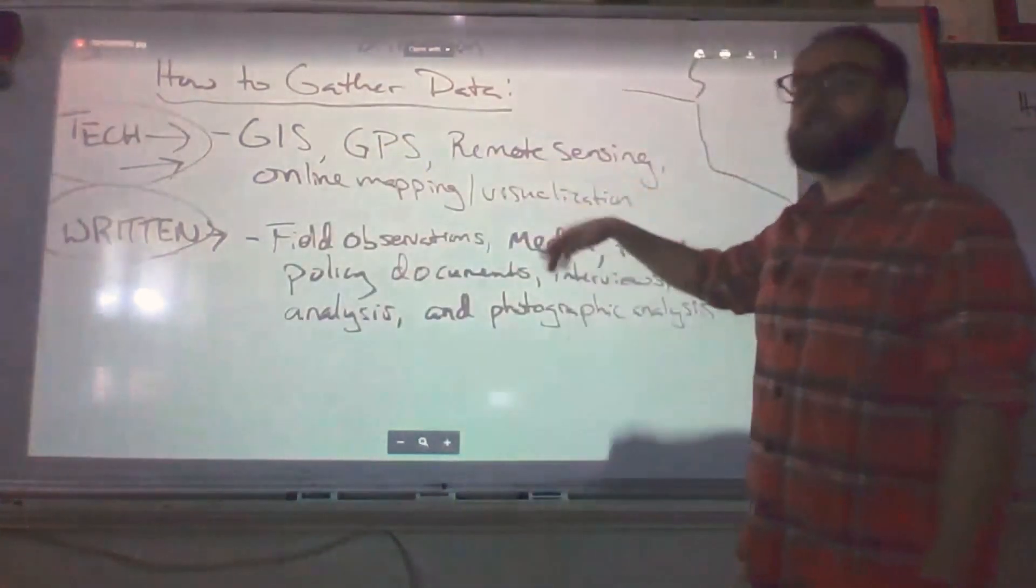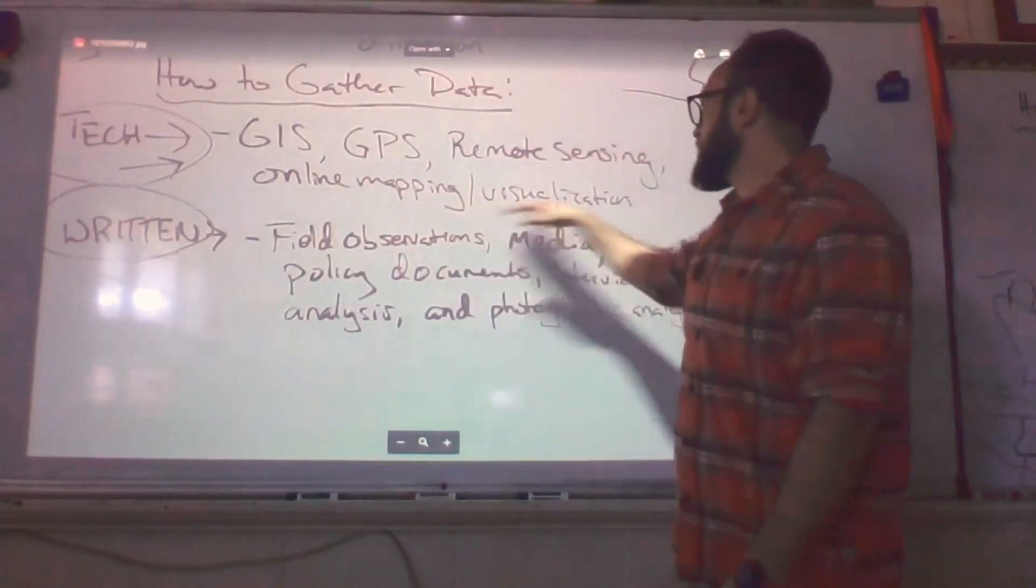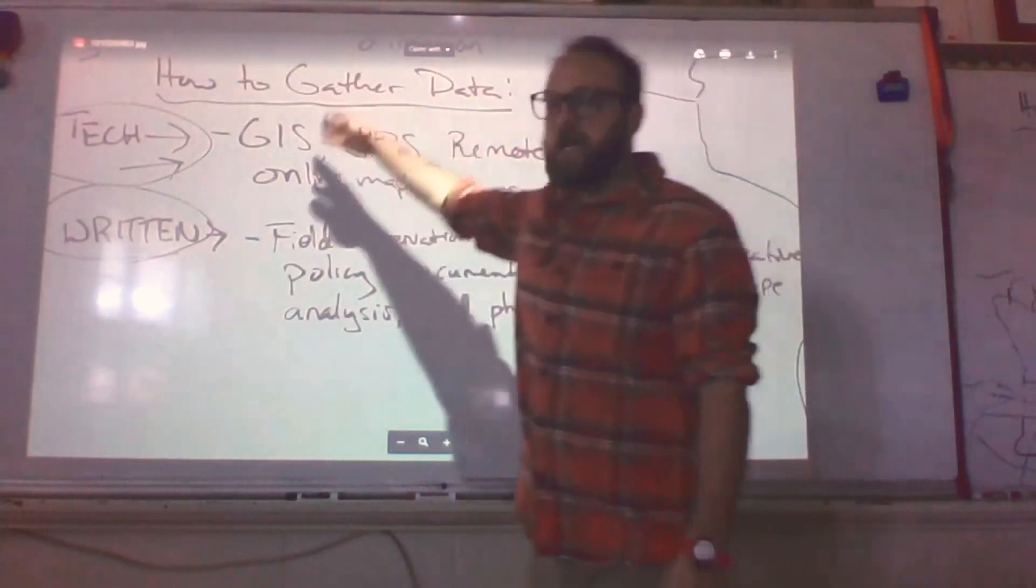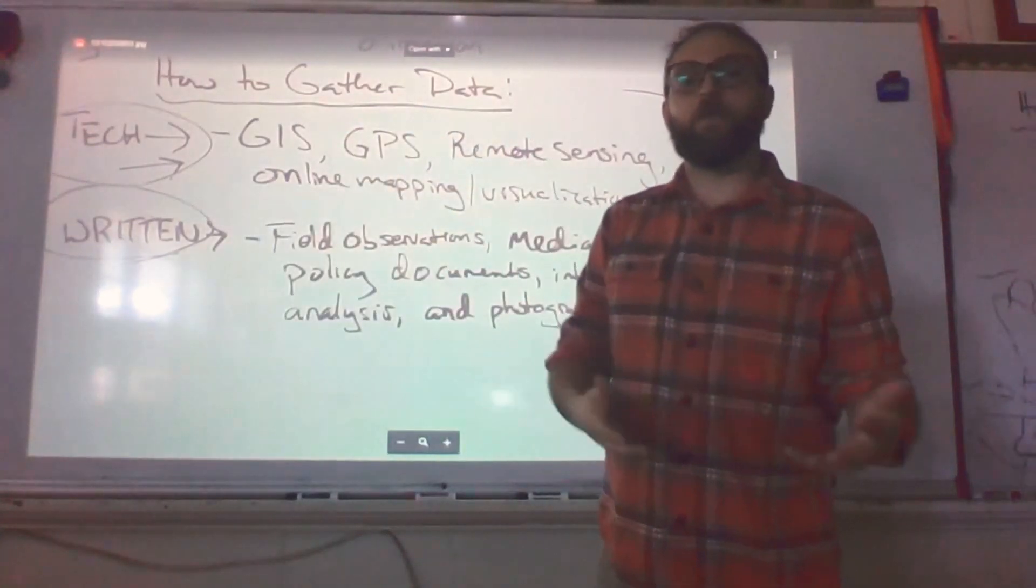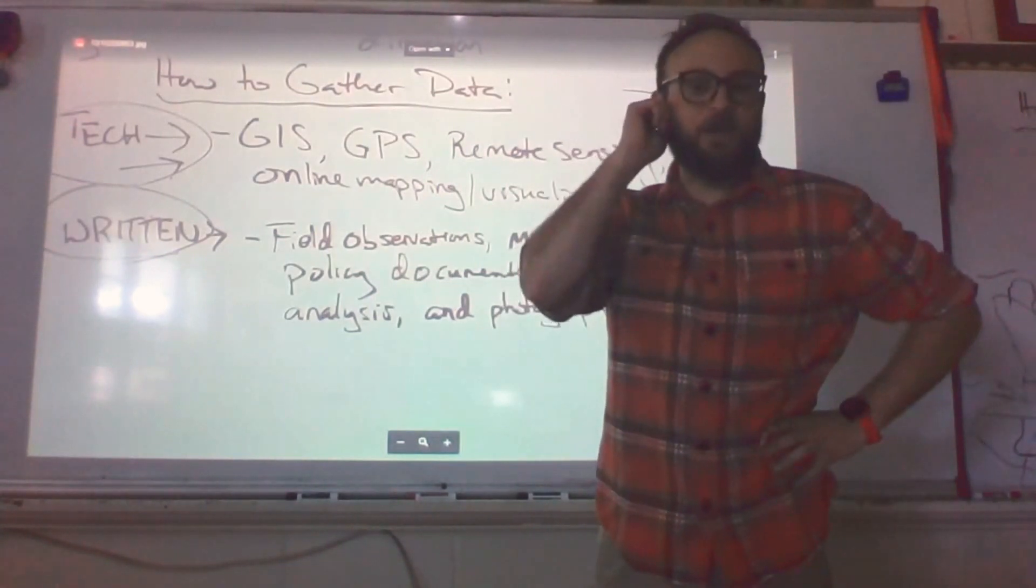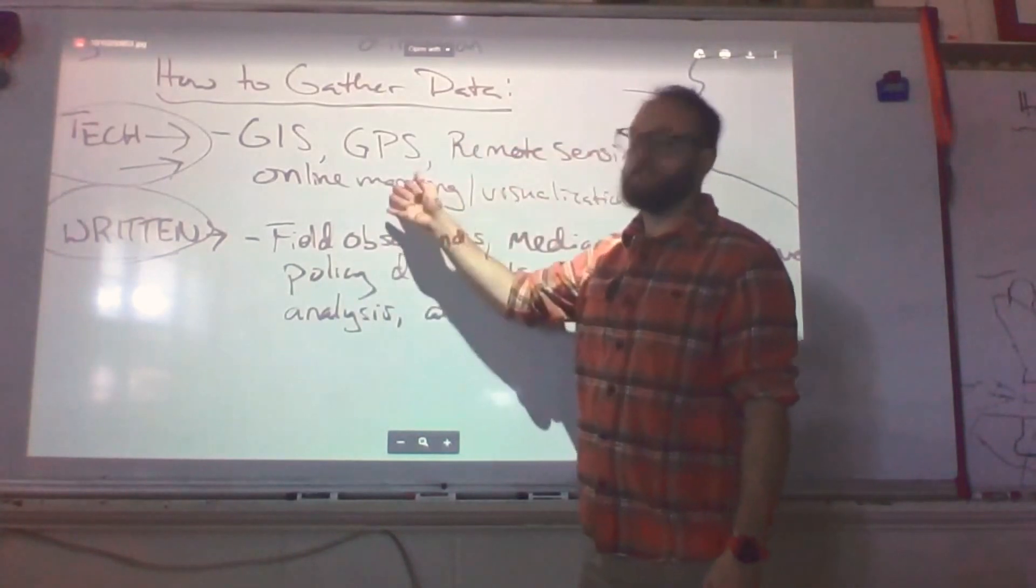Remote sensing is using satellites to actually figure out where something is. Online mapping versus visualization. This is the kind of modern world which blends these ideas and allows us to figure out what is actually happening where. I think of it as, you know, your everyday life. You know, when you use Google Earth, you're kind of blending all of these, and that's kind of the concept of online mapping.